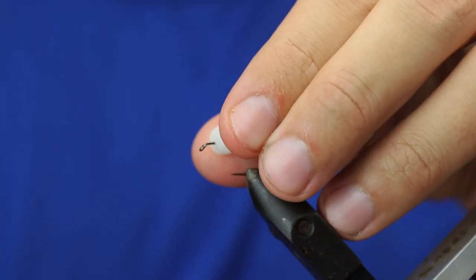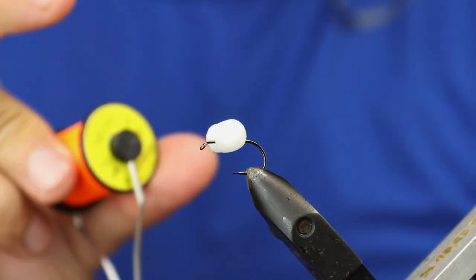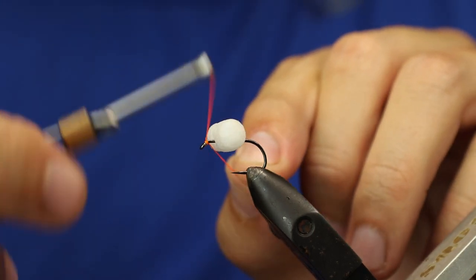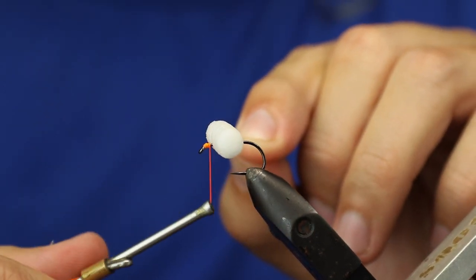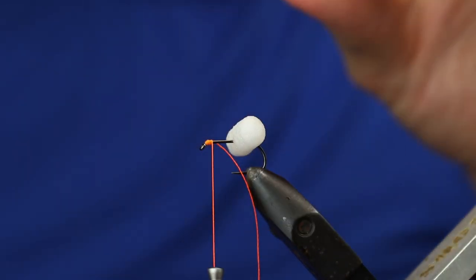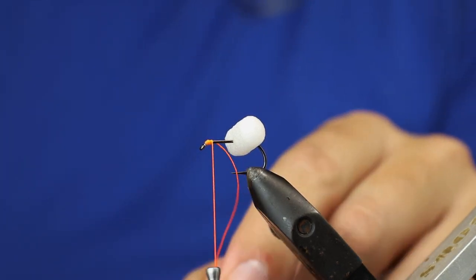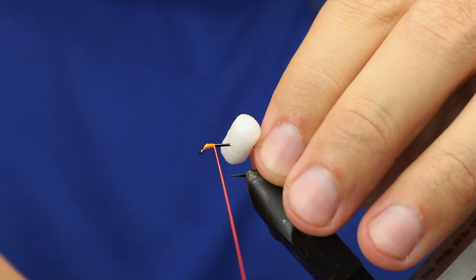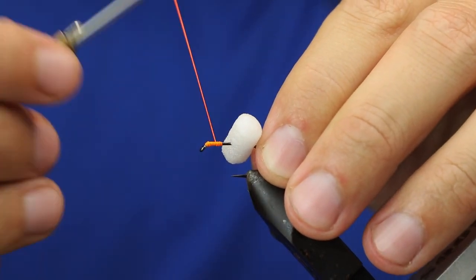The thread I'm going to use is some Uni 1-0 neon. It's a really good thick strong thread, perfect for tying on the booby eye, and it lays flat in a way that it won't cut into the foam if you give it too much tension. Let's work that down, we'll get back up.